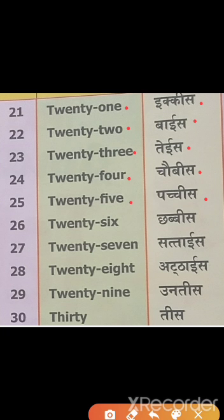TWENTY 20, SIX 6 — 26. TWENTY 20, SEVEN 7 — 27. TWENTY 20, EIGHT 8 — 28. TWENTY 20, NINE 9 — 29.